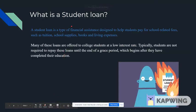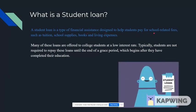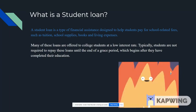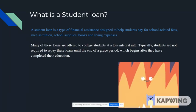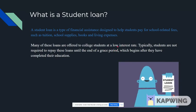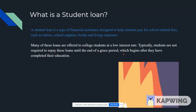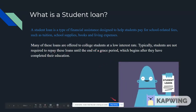What is a student loan? A student loan is a type of financial assistance designed to help students pay for their school-related fees, such as tuition, school supplies, textbooks, and living expenses. Many of these loans are offered to college students at a low interest rate. Typically, students are not required to repay these loans until the end of a grace period, which begins after they have completed their education.